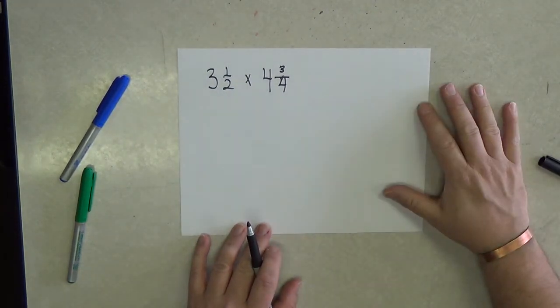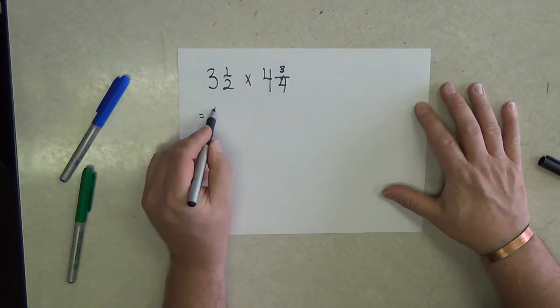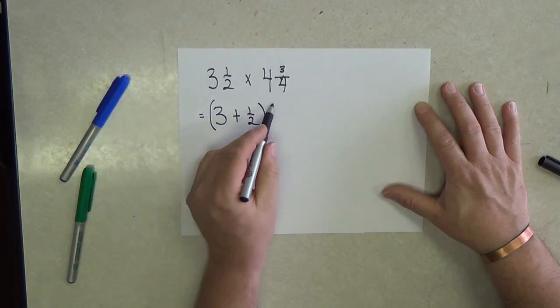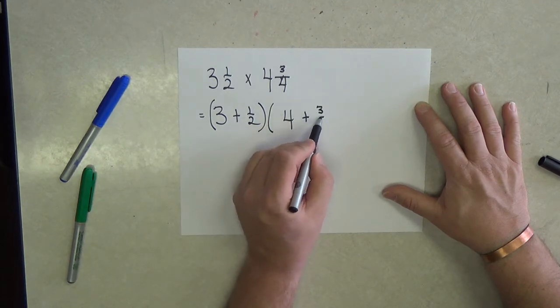What I'm going to do is use the distributive property of multiplication over addition and I'm going to rewrite this problem as 3 plus 1 half and I'm going to multiply that to the sum of 4 and 3 fourths.